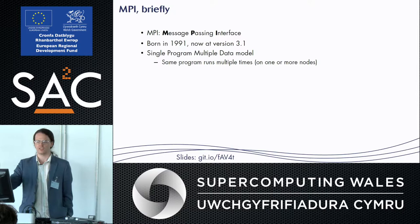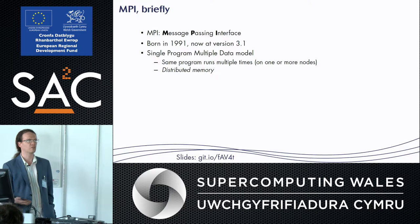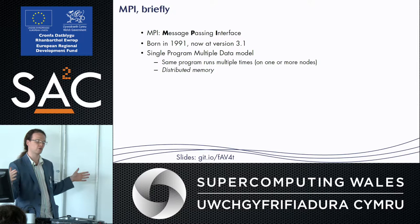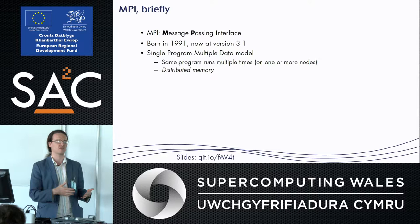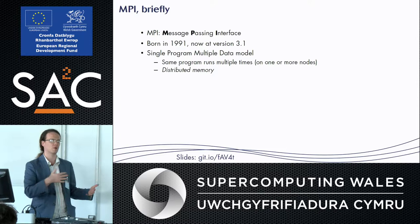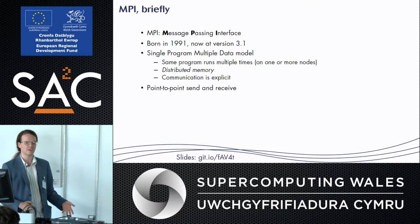You write one program that runs on a whole bunch of nodes at the same time, which gives a distributed memory model. Each copy of the program has some fraction of the memory across the global computation. This means that if you're scaling out because a node doesn't have enough RAM, it reduces the RAM requirement on each node.